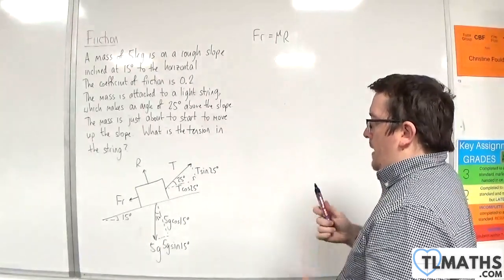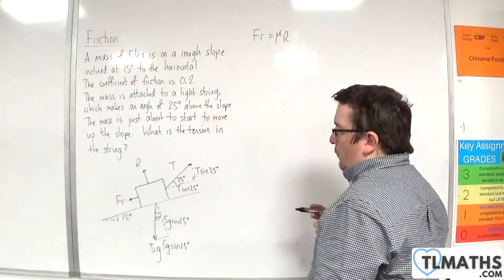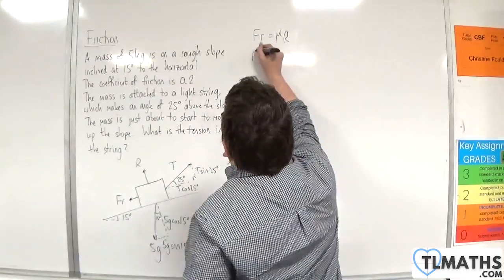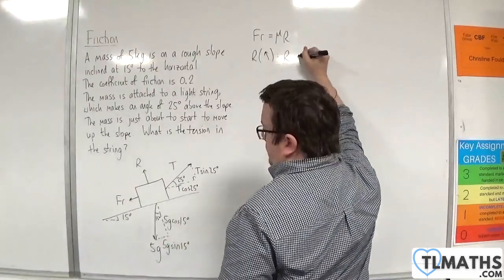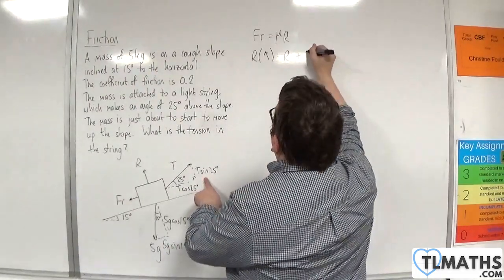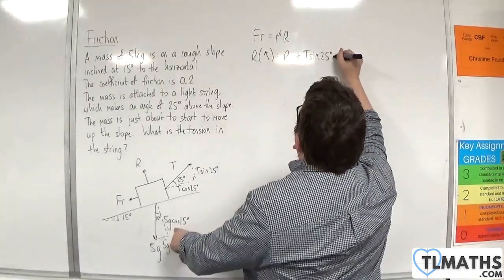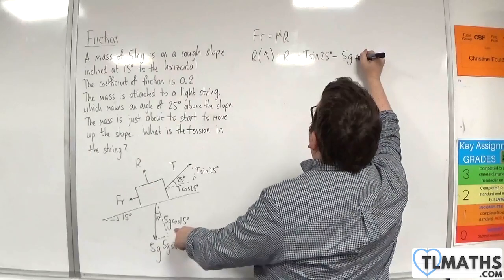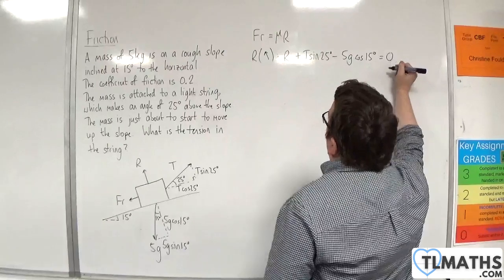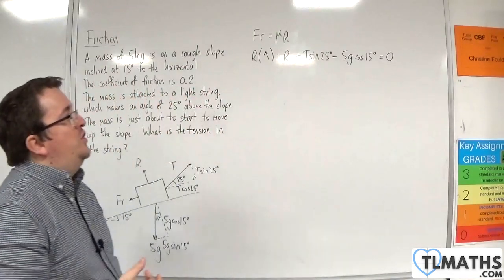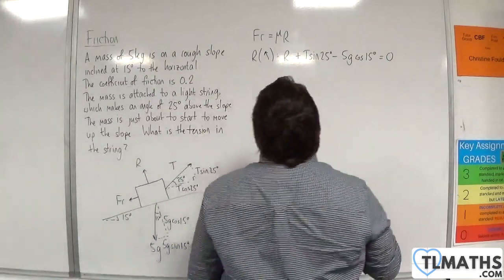So we know that we can start resolving forces. I'm going to resolve perpendicular to the slope first. So resolving perpendicular to the slope, taking that direction as positive, we'll have r plus T sine 25 degrees, take away 5G cosine 15 degrees, and that's going to be equal to 0. Now I'm just going to leave that equation as it is. I'm not going to rearrange it just yet.